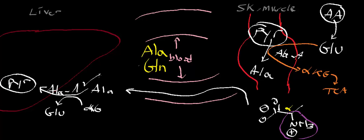The transamination from alanine to pyruvate occurs in the cytosol of hepatocytes — liver cells. The glutamate produced in the cytosol through this reaction can enter the mitochondria. It will react with glutamate dehydrogenase, forming either NADH or NADPH, and then generate alpha-ketoglutarate, which goes into the TCA cycle.